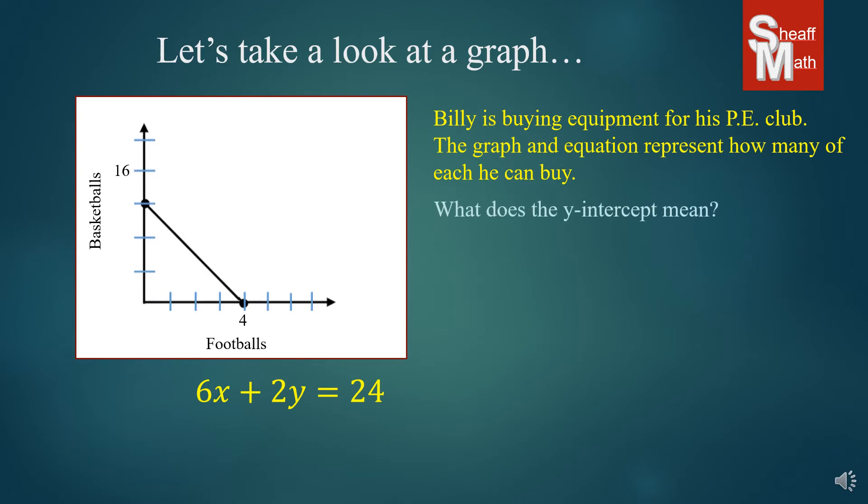So the first question is what does the y-intercept mean? The y-intercept is the point 0, 12. You'll notice that the y-axis is going by fours and the x-axis is going by ones. So 0, 12 means that since 0 is the x and 12 is the y, and footballs are x and basketballs are y, this is when he buys zero footballs and 12 basketballs. So it looks like he is able to purchase zero footballs and 12 basketballs, and that is one combination that he's able to purchase.